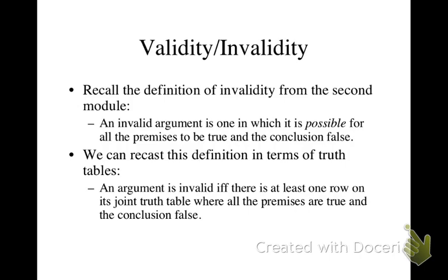If we find a row where all the premises are true and the conclusion is false, then what we've done is shown how it is possible for all the premises to be true and the conclusion false.